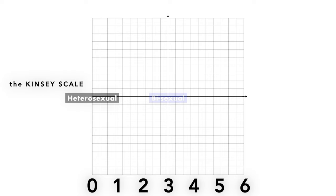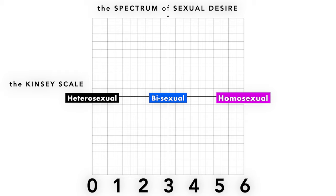We can create a visual here with an XY graph, where the Kinsey Scale is the X-axis, and the Y-axis is the spectrum of libido, or sexual desire, ranging from asexual to hypersexual.